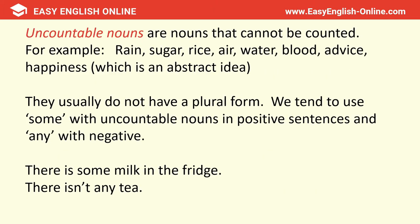Uncountable nouns are nouns that cannot be counted. For example, rain — you can't count rain. Sugar — you can't count sugar. Rice, air, water, blood, advice, happiness, which is an abstract idea. They usually do not have a plural form. We tend to use 'some' with uncountable nouns in positive sentences and 'any' with negative — for example, 'there is some milk in the fridge' and 'there isn't any tea.'